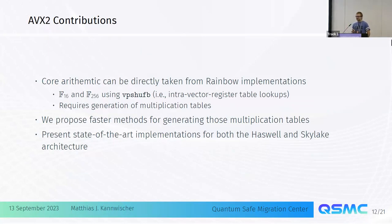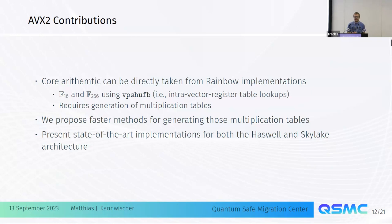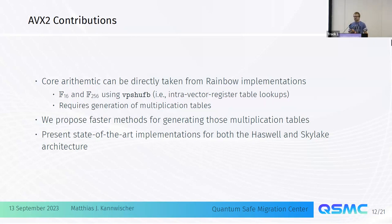Now a brief overview of the new things in our implementations — you can read the paper for the rest. For AVX2, the core arithmetic can be taken from previous Rainbow implementations. We use shuffle instructions for finite field arithmetic, which do a table lookup inside an AVX register. We show faster methods for generating multiplication tables. This gives state-of-the-art implementations, with results shown for both Haswell and Skylake.